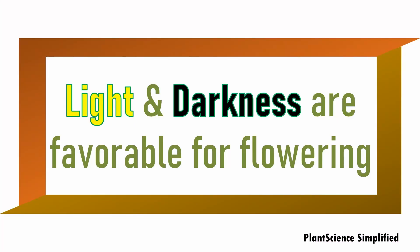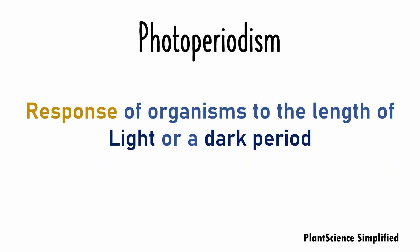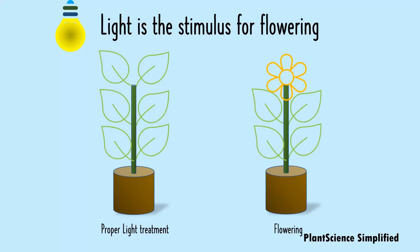Light and darkness are the most favorable conditions for flowering. Response of organisms to the length of the light and dark period are termed as photoperiodism. Providing proper light treatments to the plants will lead to flowering in plants, and that's why light is a very important stimulus for flowering.